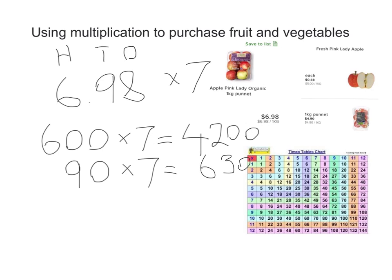Then I look at my 8. So I've got 8 cents here, and I can multiply that by 7. So once again, using my times table chart, I find my 8 and my 7, which is just here, and I can see that 7 times 8 is 56. So 8 times 7 equals 56.